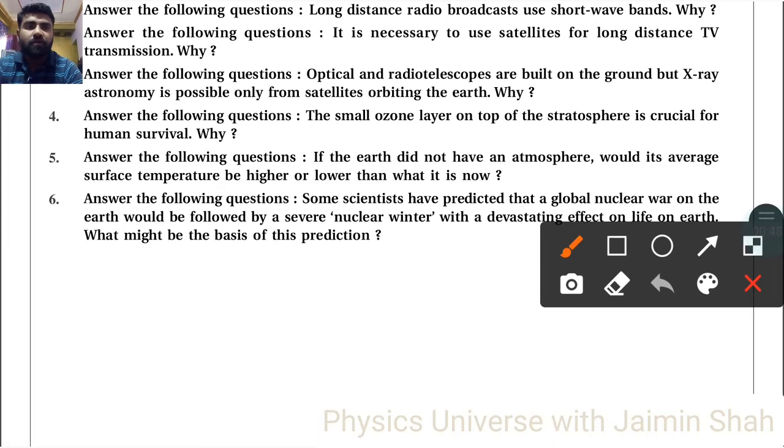Why? Because X-rays inside the atmosphere will be absorbed. If absorbed, they will be lost. So X-ray astronomy is possible only from satellites orbiting the earth, while optical and radio telescopes are built on the ground because they can transmit inside the atmosphere. Optical and radio telescope waves also transmit inside the medium.